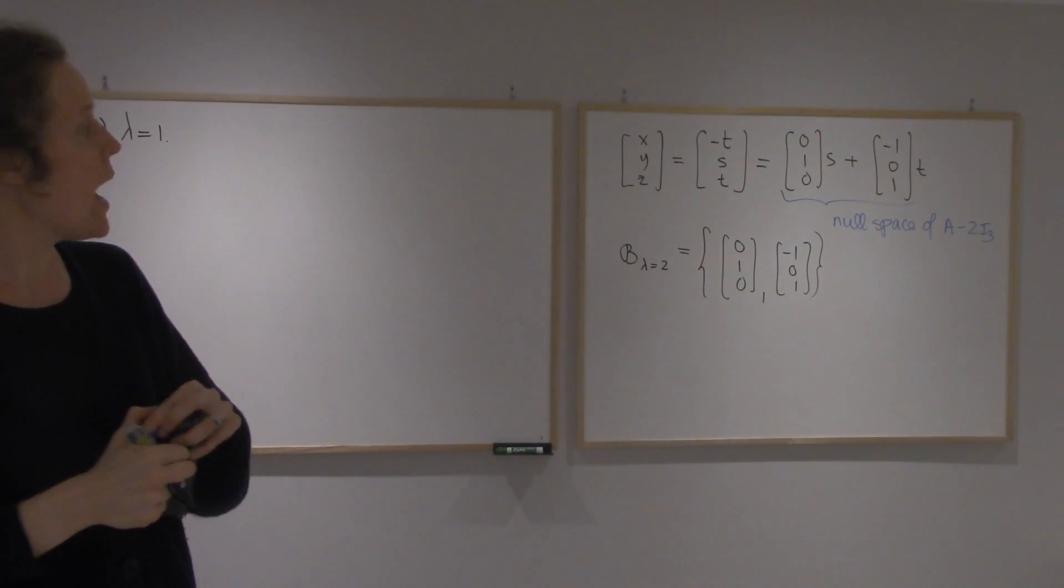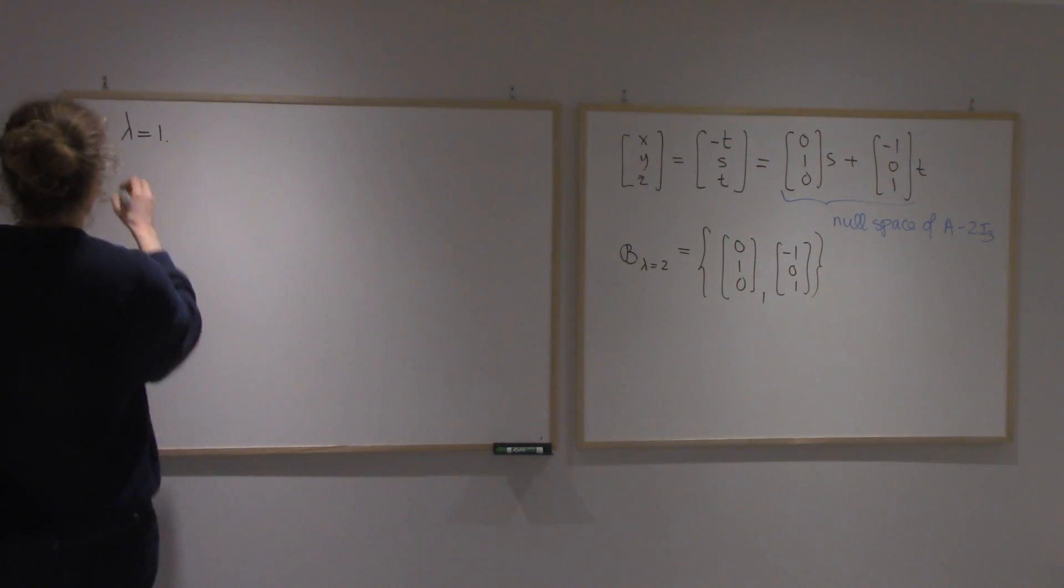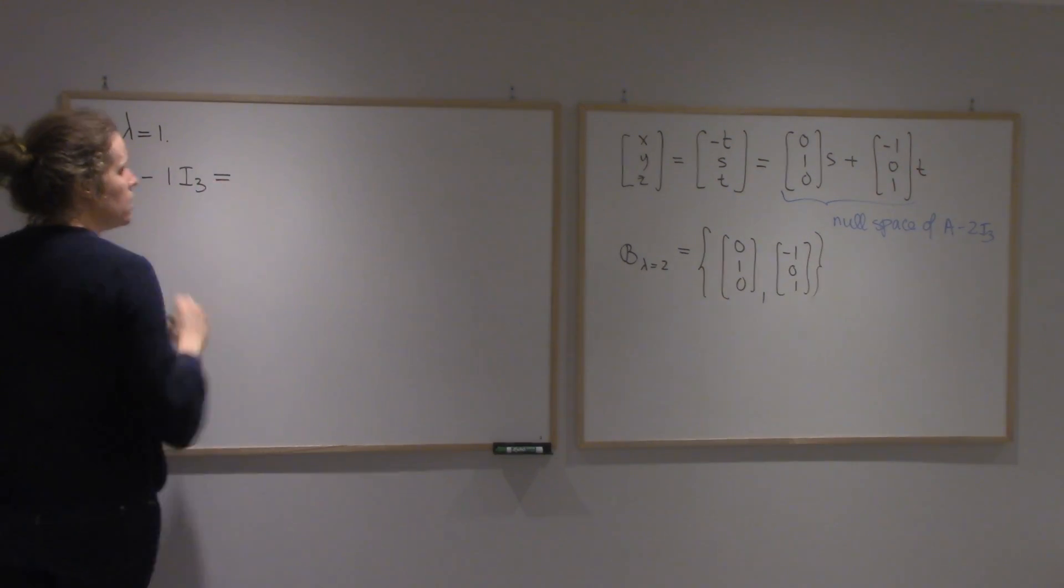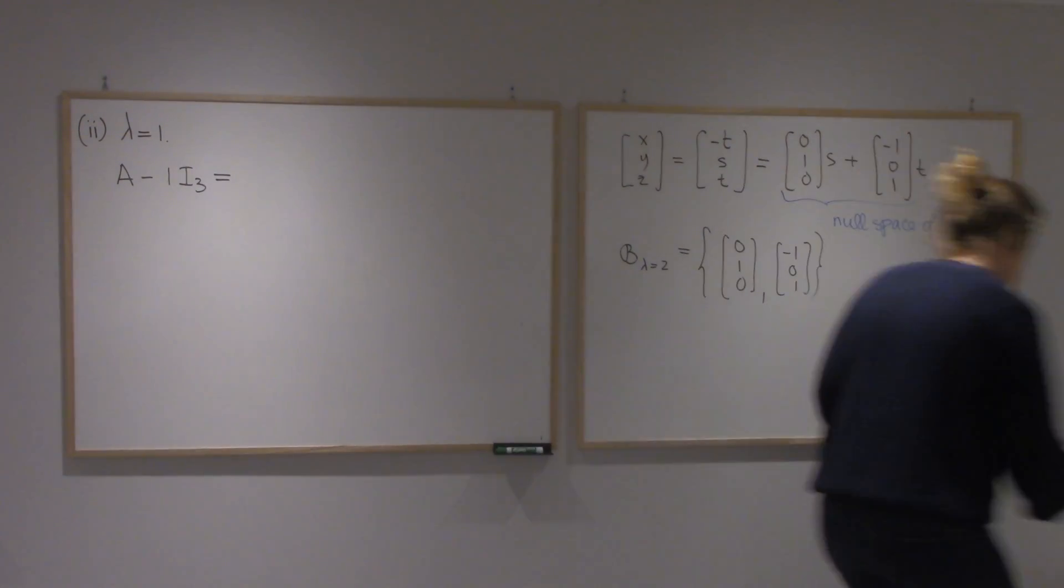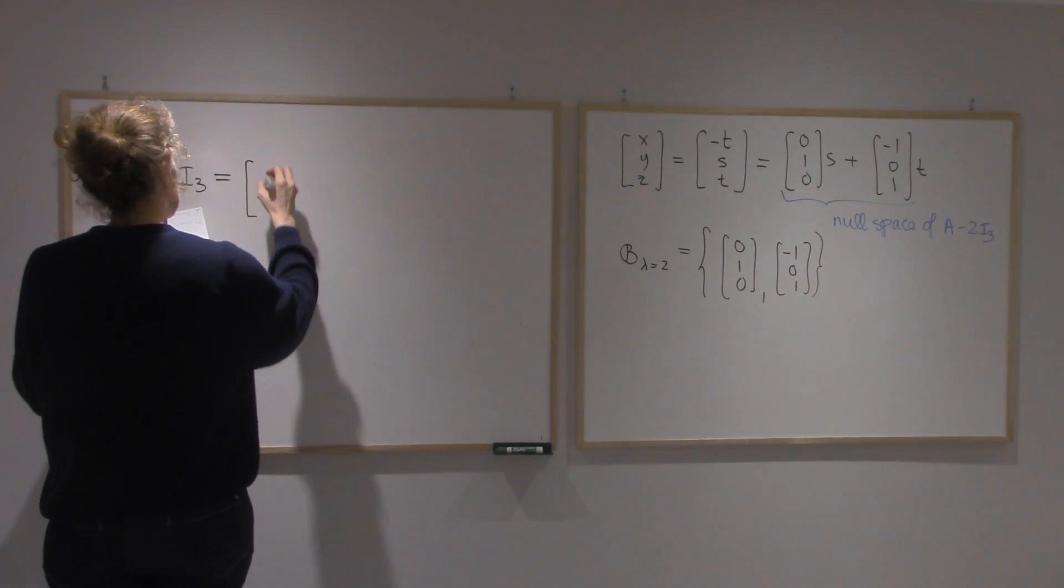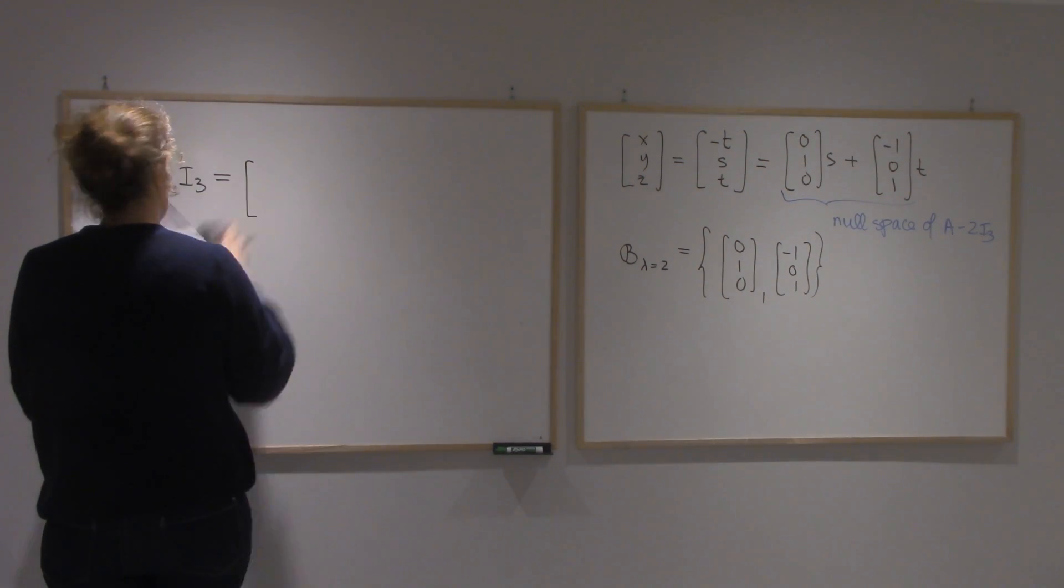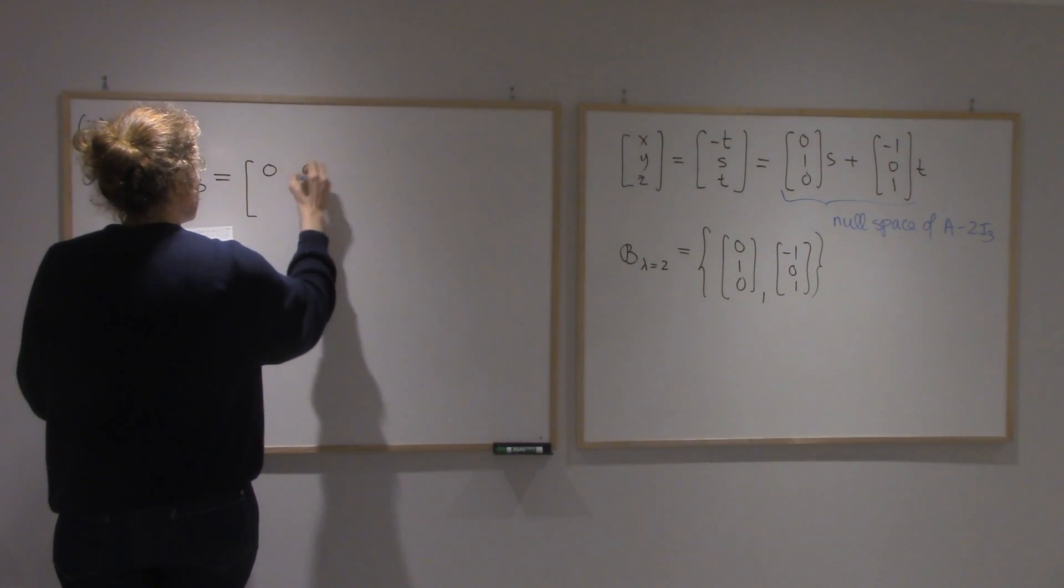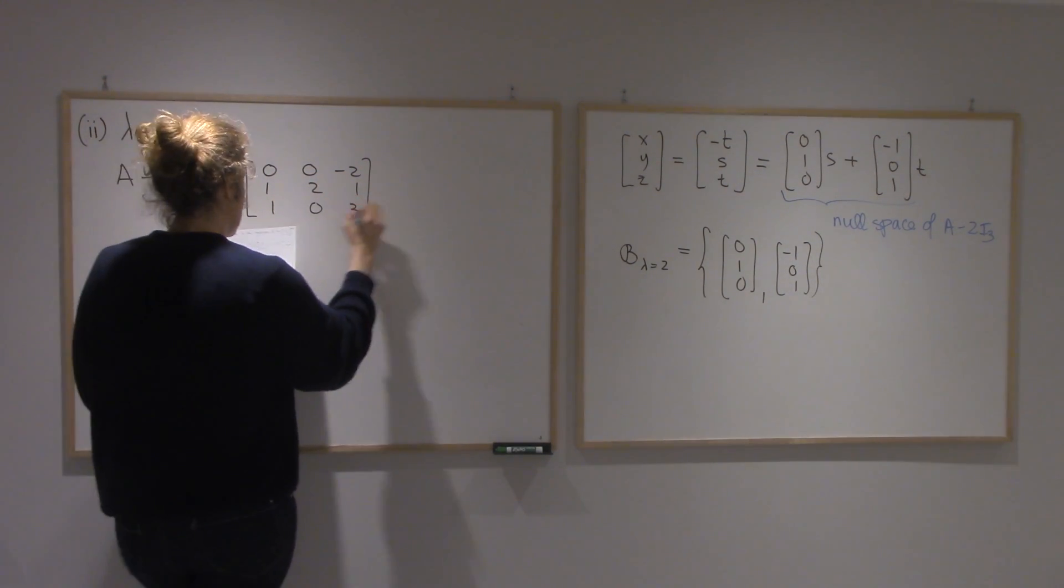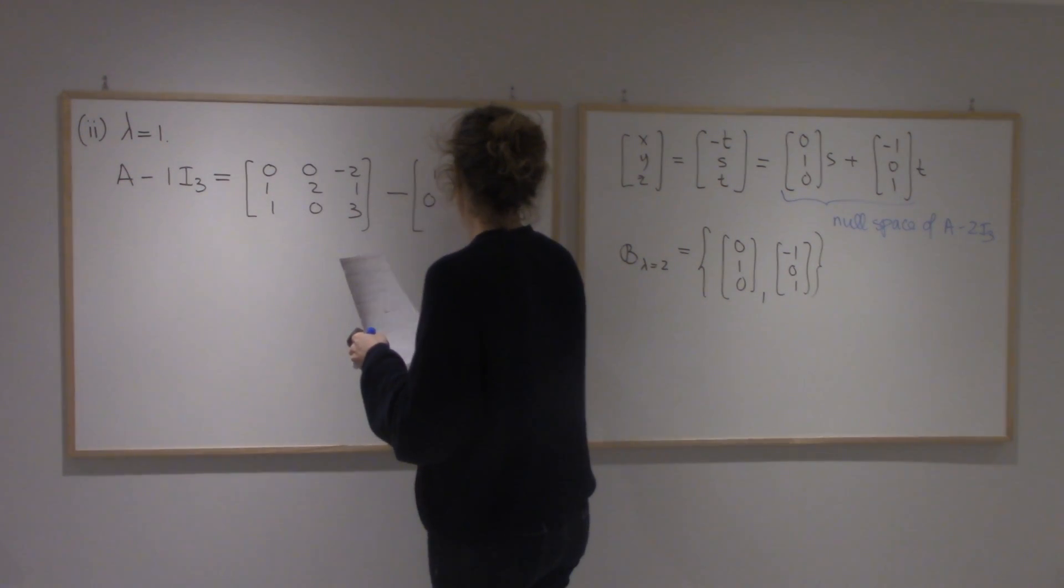Alright, so again we're looking for the eigenspace of A minus 1 times I3. Now I've erased my matrix. So let's take my memory sheet. So minus, my A was 0, minus 2, 1, 2, 1, 1, 0, 3, minus 1. So perfect. Ones on the diagonal.